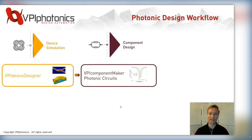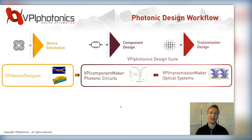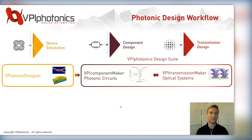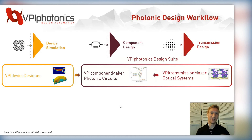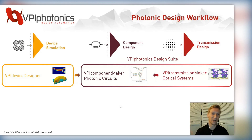Our transmission design software, VPI Transmission Maker Optical Systems, can then use that circuit within the entire optical system. At the system level, you can have a transmitter, an optical fiber, a receiver, DSP blocks, and you can calculate things like the bit error rate. What's really unique is that you can take your device-level simulations and see how they perform at the circuit level, and ultimately at the system level, impacting the bit error rate of your system — then go back and optimize your device as needed.